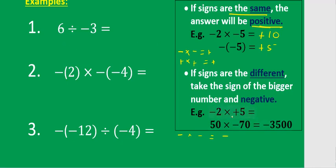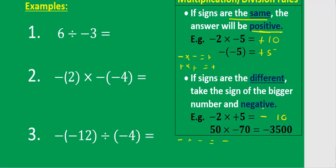When the signs are different, the answer will be negative: 2 times 5 is 10 with a negative sign. Looking at examples: 6 positive divided by 3 negative — different signs — answer is negative, and 6 divided by 3 is 2, so the answer is negative 2. If the sign outside and inside the bracket are the same, you get a positive answer. Multiplying different signs gives a negative: 2 times 4 gives negative 8.